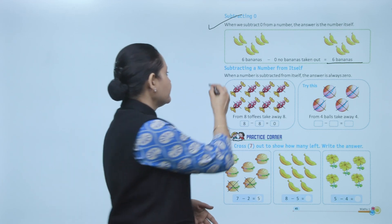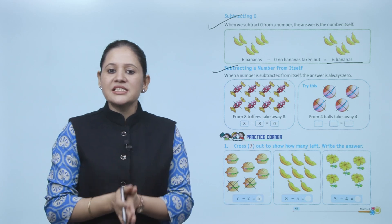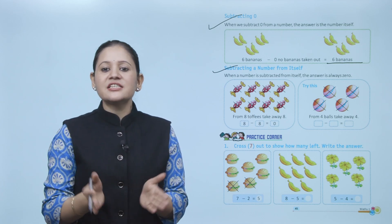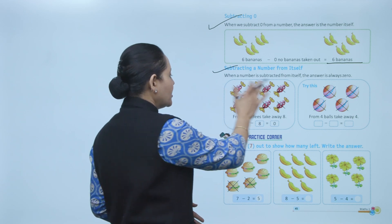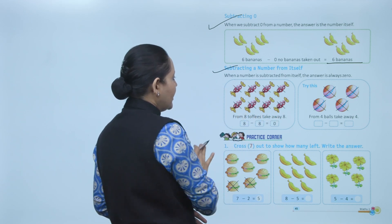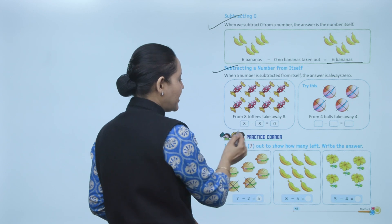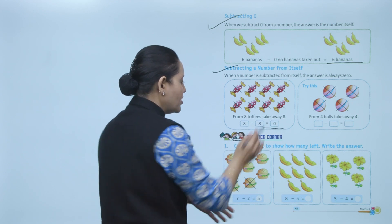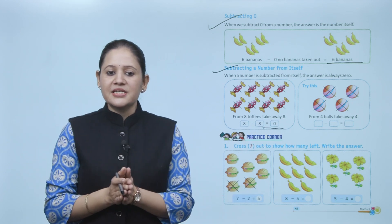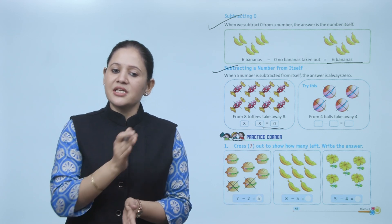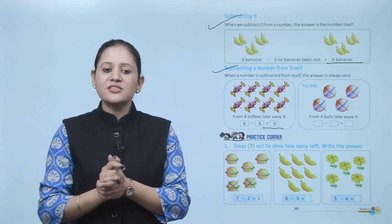Next, subtracting the number from itself. When a number is subtracted from itself, the answer is always 0. Here, total 8 toffees — 8 is taken away, so we've crossed out all 8 toffees. So 8 minus 8 equals 0. If we subtract the same number from itself, the answer will always be 0.